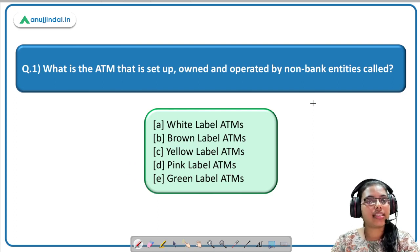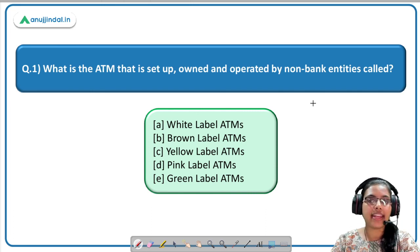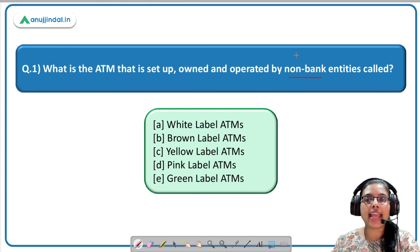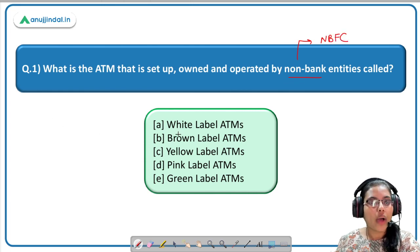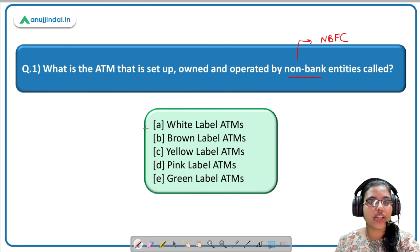The first question on the screen says: what is the ATM — that is, Automated Teller Machine — that is set up, owned, and operated by non-bank entities called? Non-bank means NBFCs. The options given are white label ATMs, brown labeled, yellow, pink, or green labeled ATMs. The correct answer to this question is A — White Label ATMs.